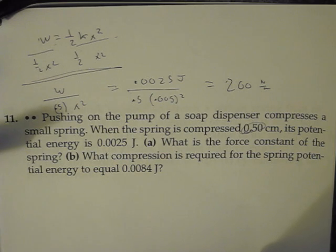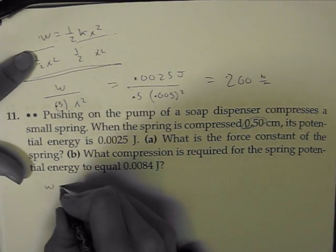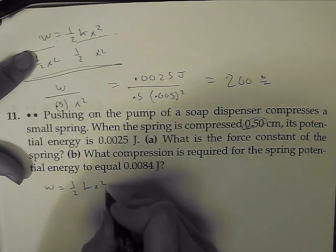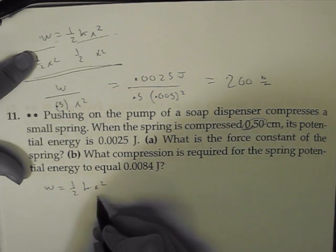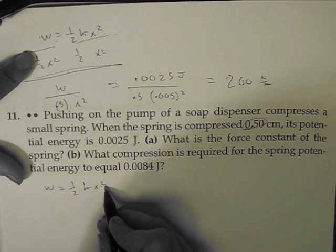Part B is pretty much the same thing, just they're asking for a different value. So once again, if work equals 1 half kx squared, let's solve for x right here.